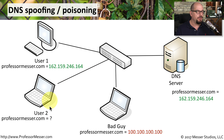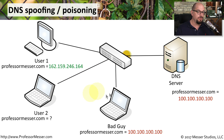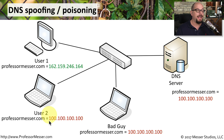Before the second user is able to make the exact same request, the bad guy is going to take control of the DNS server and make changes so that the ProfessorMesser.com address is now pointing to a completely different IP address. Now, each subsequent user to the DNS server will still get a response for ProfessorMesser.com, but it will contain a completely incorrect IP address. The bad guy now has control of where people will be going every time they type in ProfessorMesser.com.